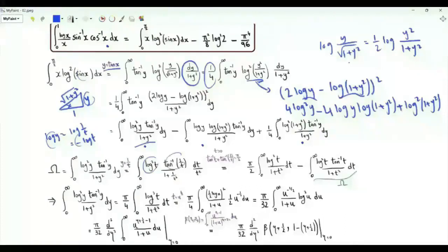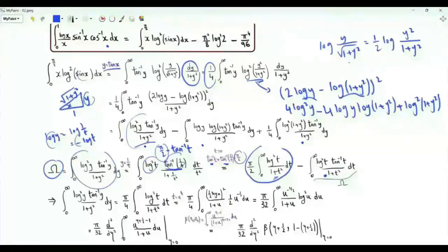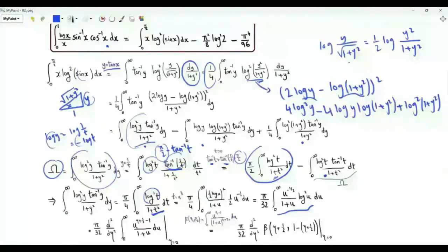Since log y = log(1/t) = -log t, squaring gives (log y)² = (log t)². The inverse tangent of y equals the inverse tangent of 1/t, and using the identity arctan(t) + arctan(1/t) = π/2 for positive real t, we replace this arctan by π/2 minus arctan(t). We then have two integrals: π/2 times the integral from 0 to ∞ of (log t)²/(1+t²), and a second integral which equals ω. Thus ω equals one half of this part. This integral is π/4 times the integral from 0 to ∞ of (log t)²/(1+t²). Using the substitution t equal to √u, (log t)² becomes (1/4)(log u)², and dt/(1+t²) becomes (1/2) u^(-1/2) du/(1+u).